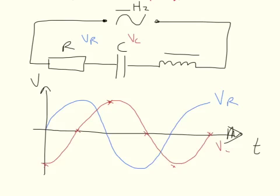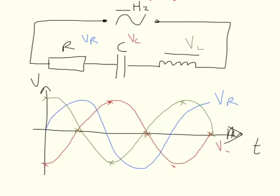The voltage across the capacitor lags behind because it reaches its peak later on the time scale. Then we have the voltage across the inductor, which leads — it hits its peak before the resistor. And the capacitor and inductor voltages should be exactly out of phase, or opposite phase, with each other.